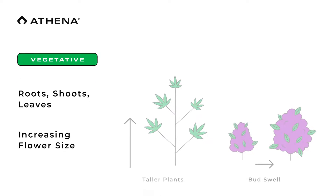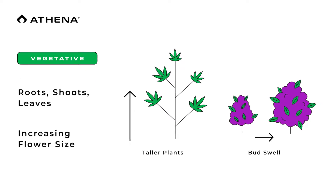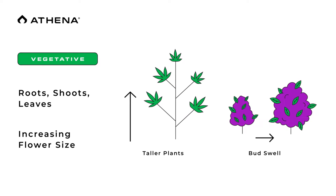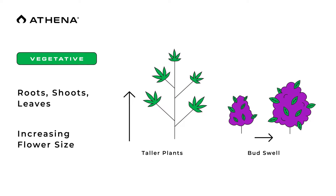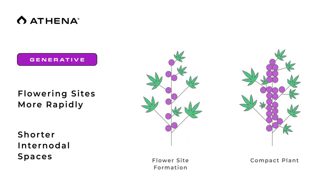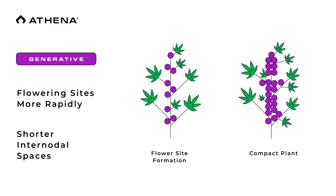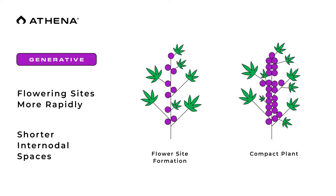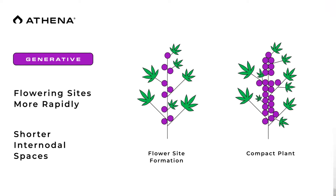Inducing stress will push more generative growth cues while alleviating stress will trigger a vegetative growth response. Vegetative growth is when a plant's energy is focused on producing more roots, shoots, leaves, and increasing flower size. Plants in a vegetative growth phase will typically grow taller and wider. Generative growth is when a plant's energy is focused on producing flower sites more rapidly, and plants will typically grow more compact with shorter internodal spaces.